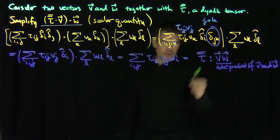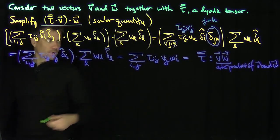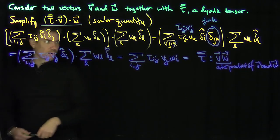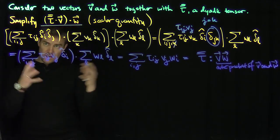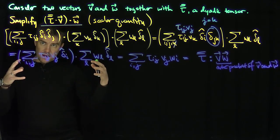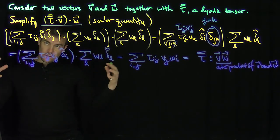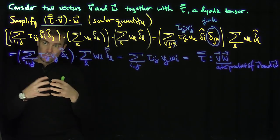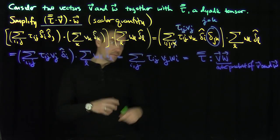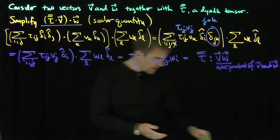This identity comes up a lot when doing decompositions in the Euler equations and the Navier-Stokes equations, where you look at the covariant derivative and the velocity term, which has the form of this double dot product.